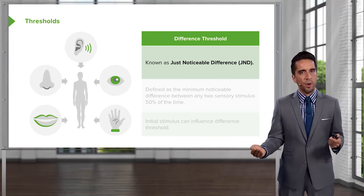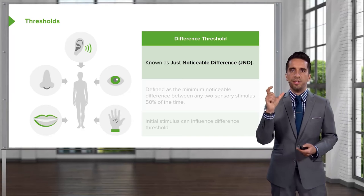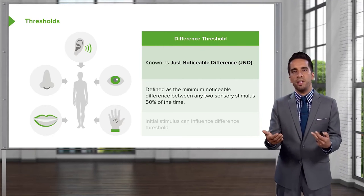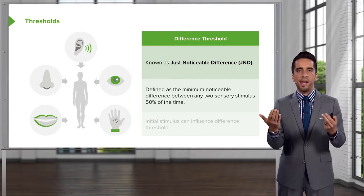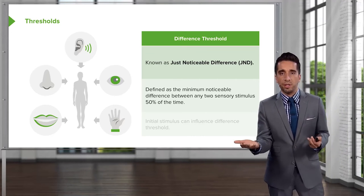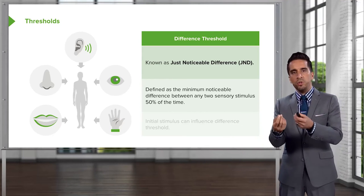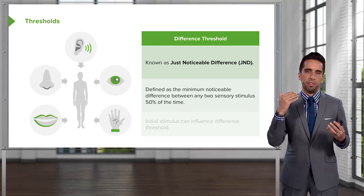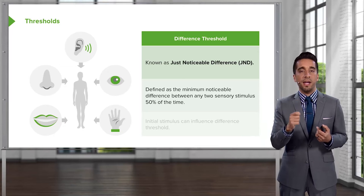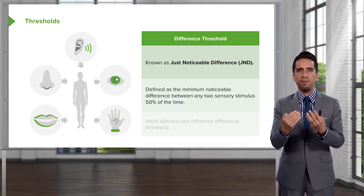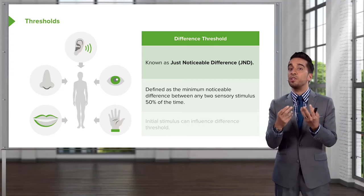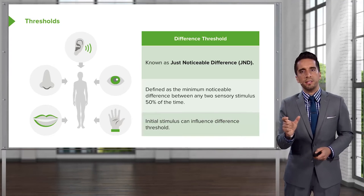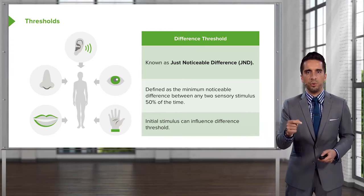Difference threshold is also known as just noticeable difference, or JND. It's defined as the minimum noticeable difference between any two sensory stimuli half of the time — essentially detecting change. Going back to our candle example in the darkness at three miles: if I add a second candle, would you be able to detect that it's now brighter? You would have to notice that difference of the additional candle at least half the time. That value is your just noticeable difference. The initial stimulus can influence the difference threshold.